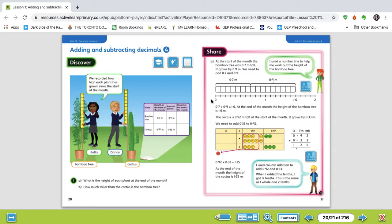It grows by 0.9 meters, so we need to add those together to figure out the height at the end of the month. Same thing with the cactus, 0.92 at the start of the month and an overall growth of 0.33 meters.